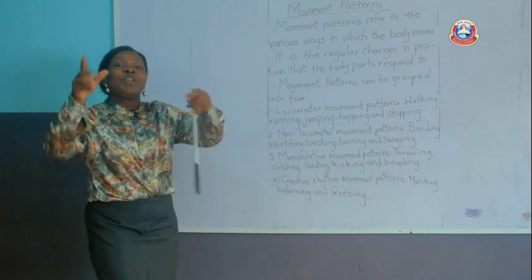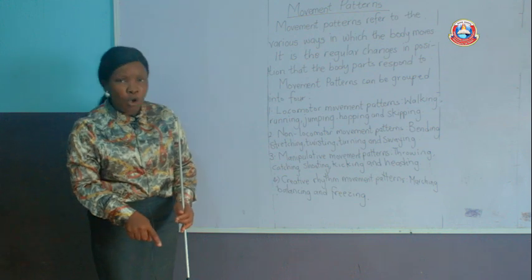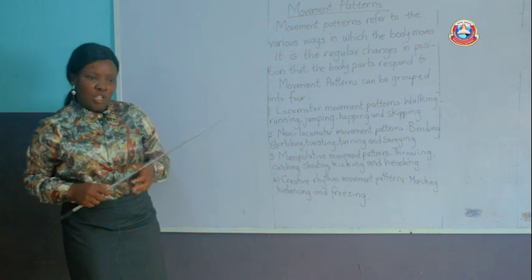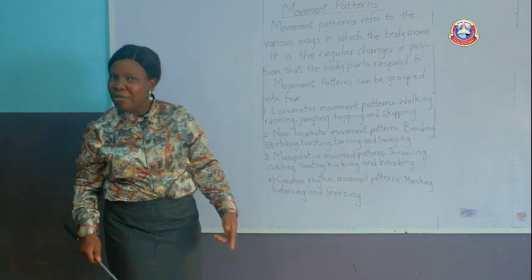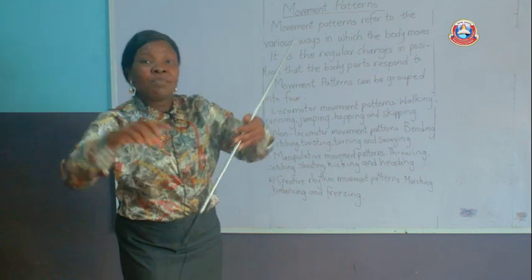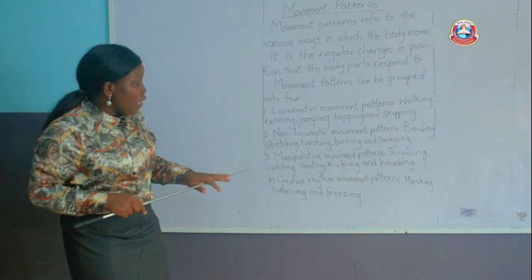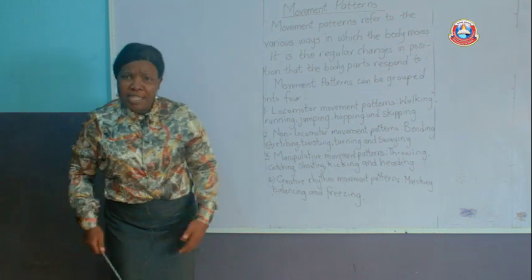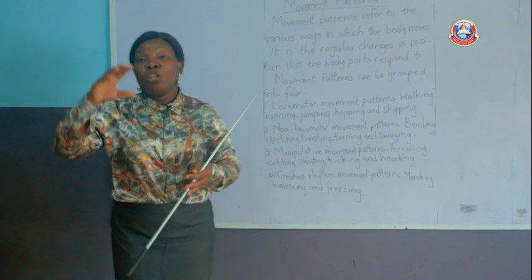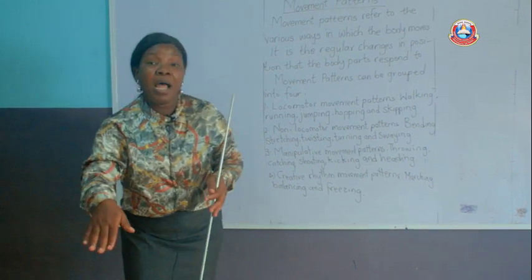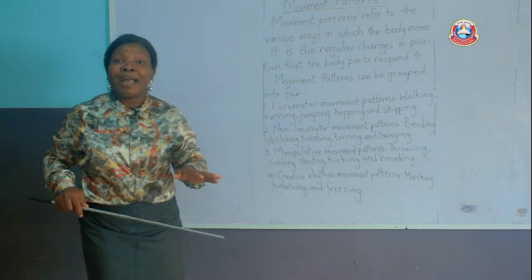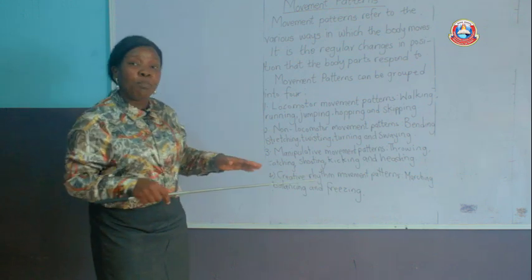Then we have catching. If the ball is thrown at you, you will not allow the ball to touch the floor — you will try to catch it. That is a manipulative kind of movement. While your teammate is throwing the ball, you are trying to catch it. Then we have kicking — you are using your leg to score a goal. When you kick the ball, you try to pass it to your teammate; that is a manipulative movement pattern.